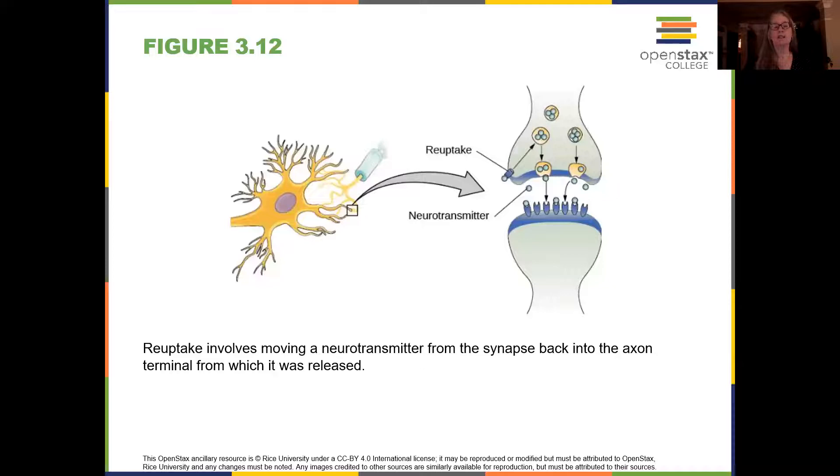We already talked about this, how reuptake is if the neurotransmitter is still in the synapse, it may go back to the initial terminal buttons, go back into that first neuron if it hasn't been taken up by the second one.